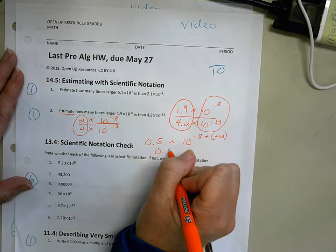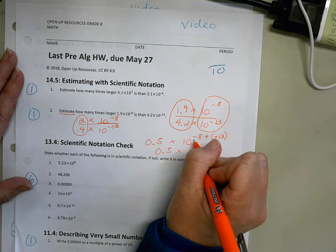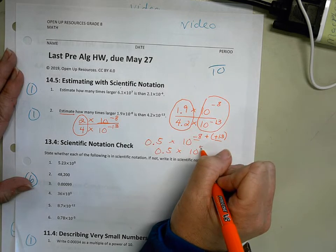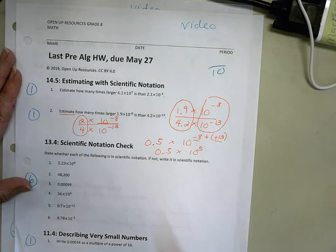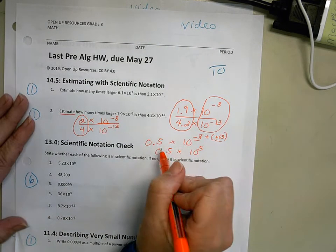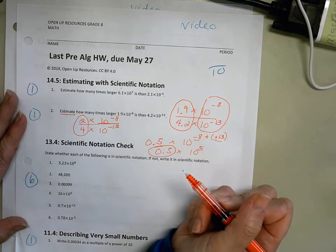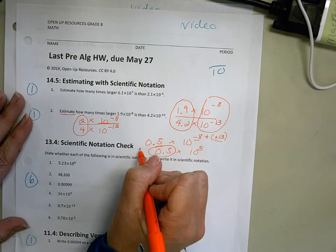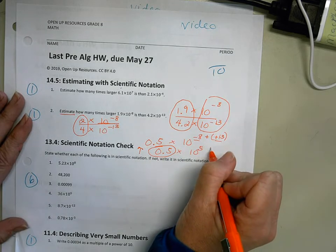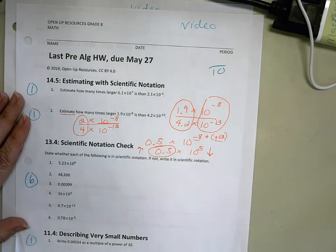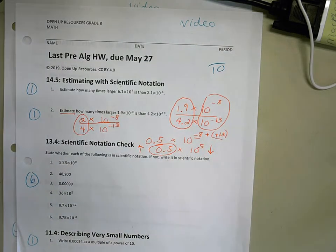So I have 0.5 times 10 to the negative 8 plus 13, which is positive 5. This answer, though, isn't in scientific notation because my first term needs to be at least 1. So I'm going to multiply this value by a power of 10 and then decrease this by a power of 10 to keep the number equivalent.